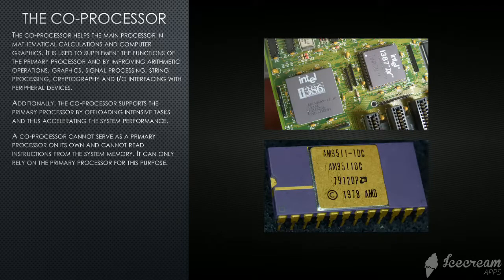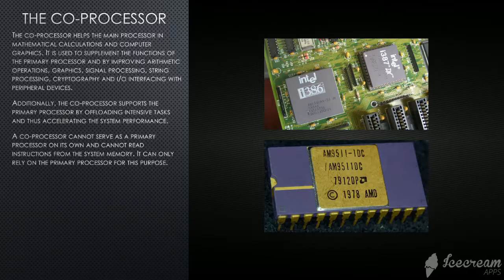A coprocessor cannot serve as a primary processor on its own and cannot read instructions from the system memory. It can only rely on the primary processor for this purpose.